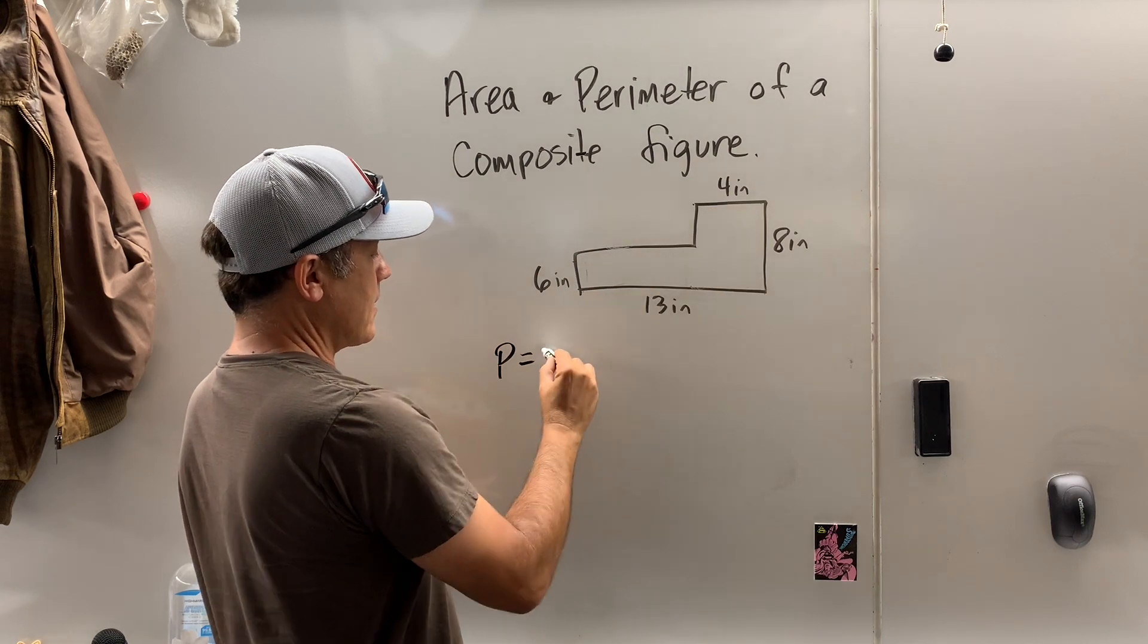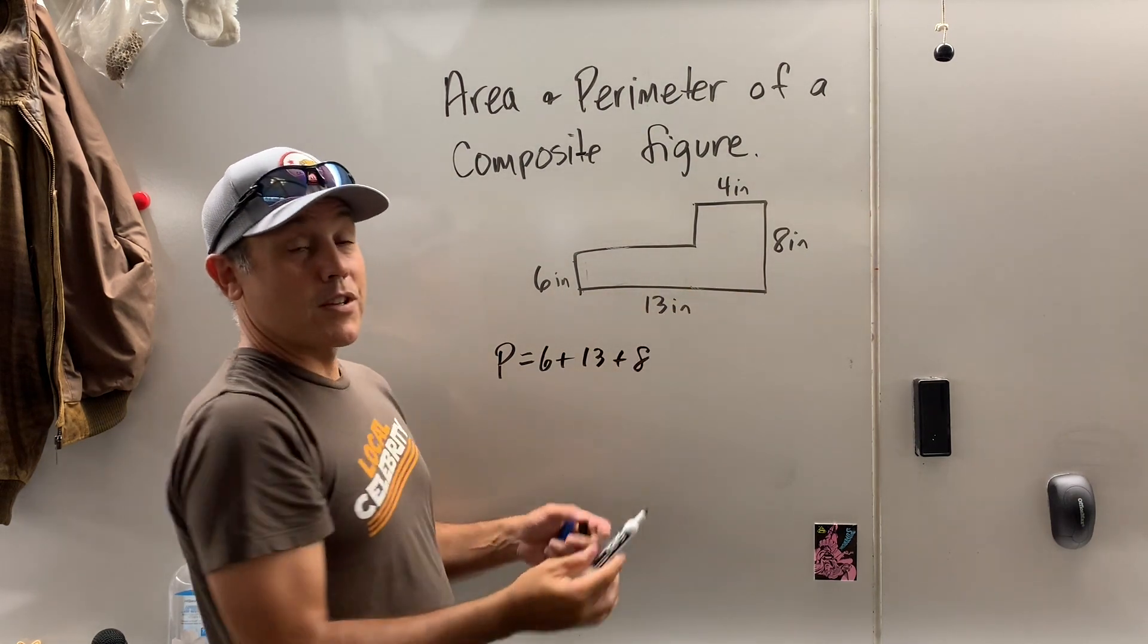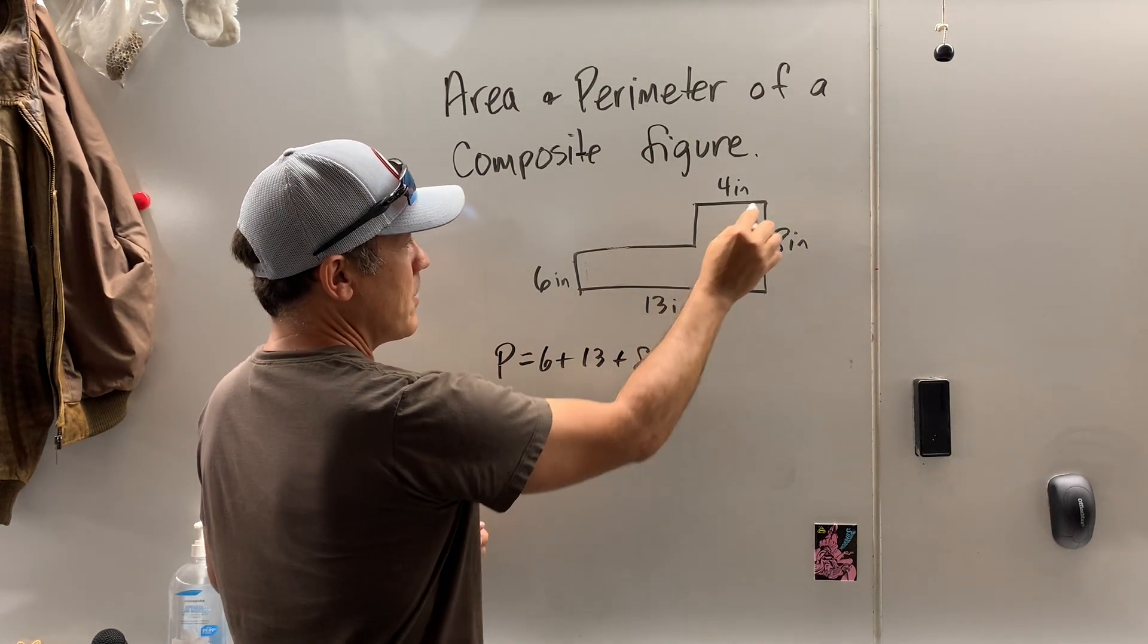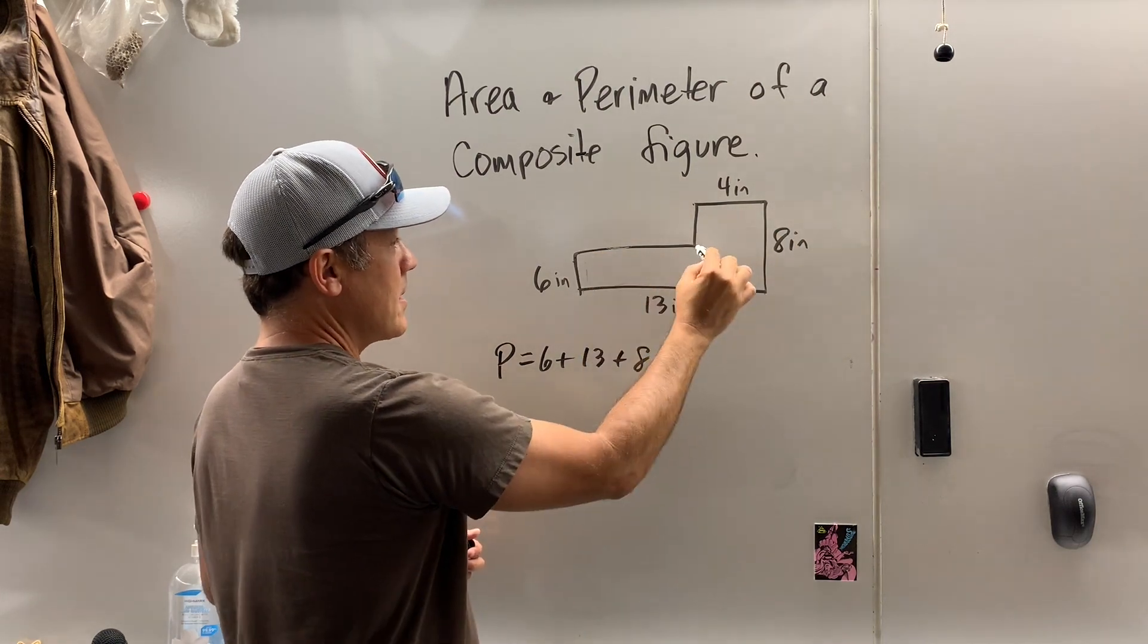So I got 6 plus 13 plus, see, this is what's called showing your work, plus 4. Well, all we need is this guy. Well, from here to here is 8, and from here to here is 6.